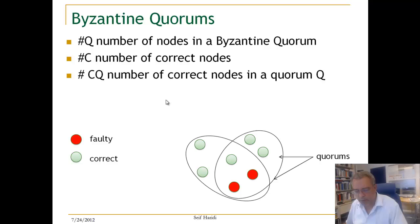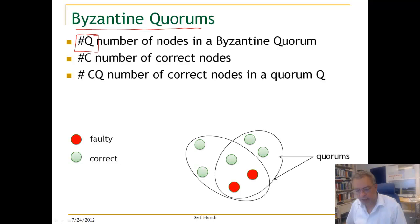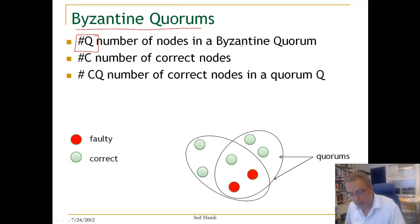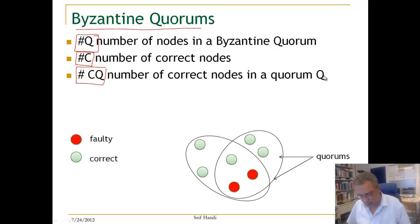We are going to use this notation when talking about a Byzantine quorum. |Q| is the number of nodes in a Byzantine quorum, |C| is the number of correct nodes, and |CQ| is the number of correct nodes in a quorum Q.